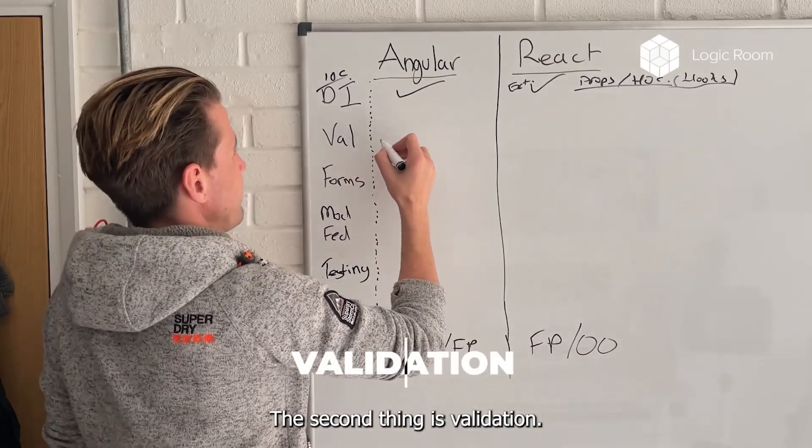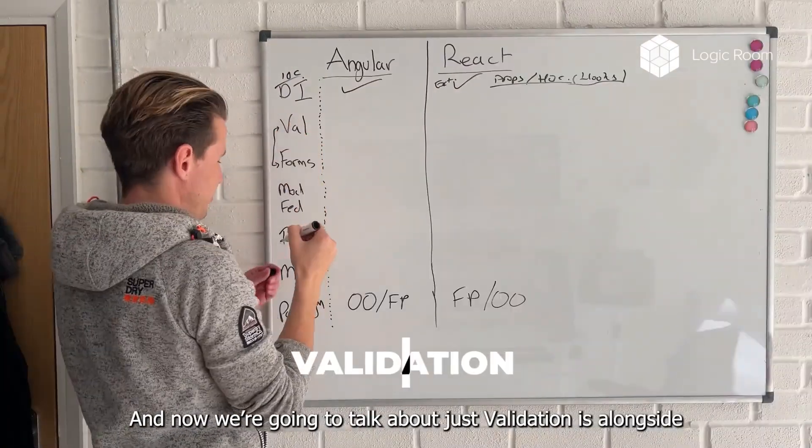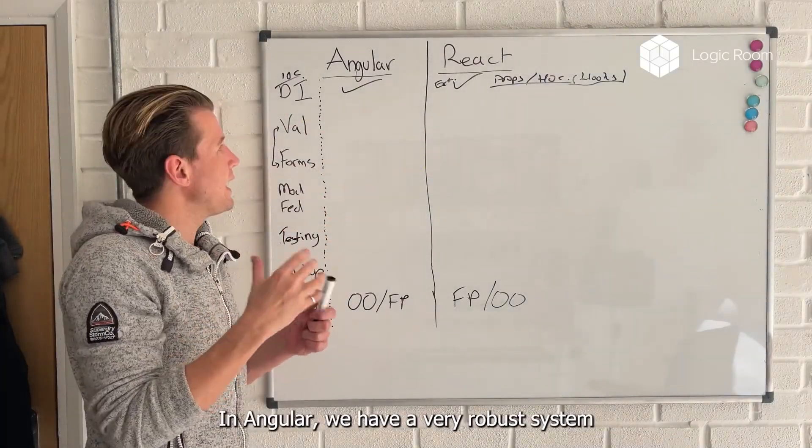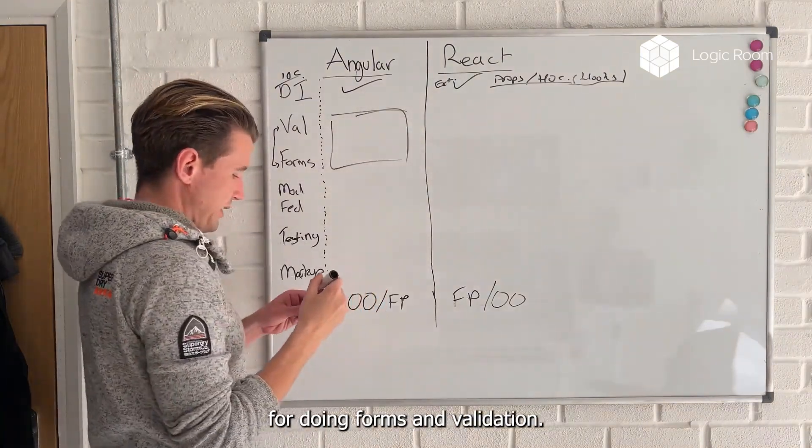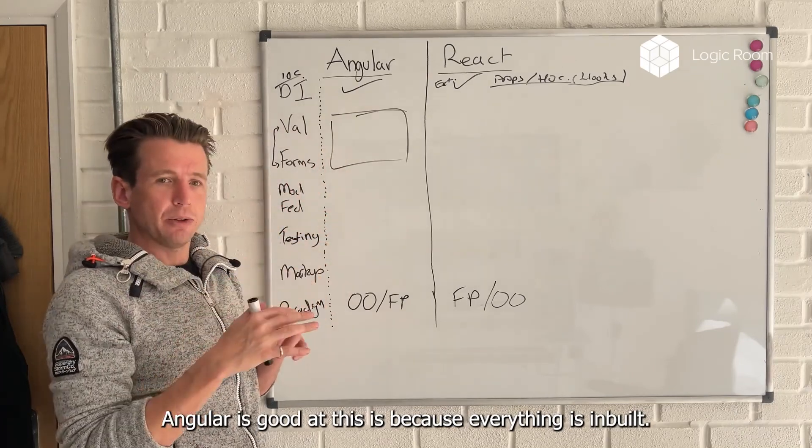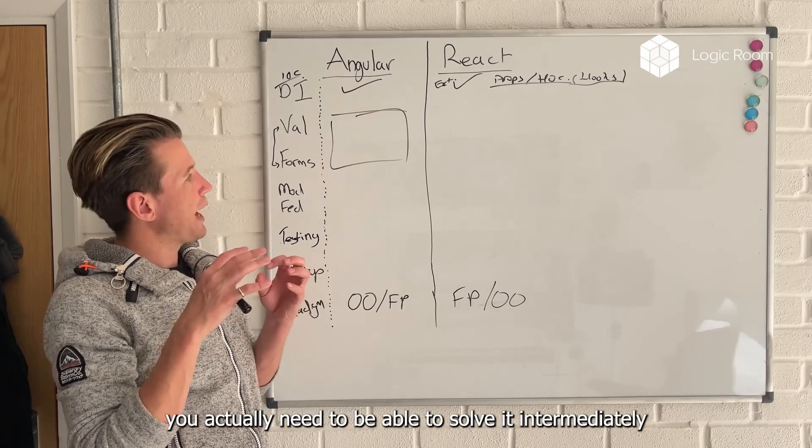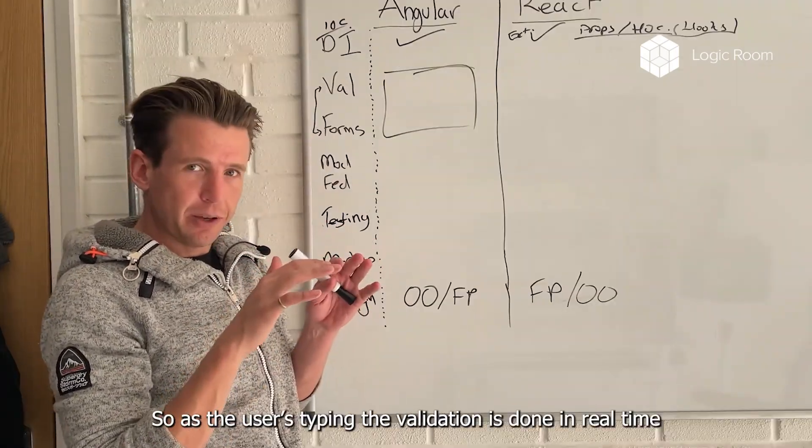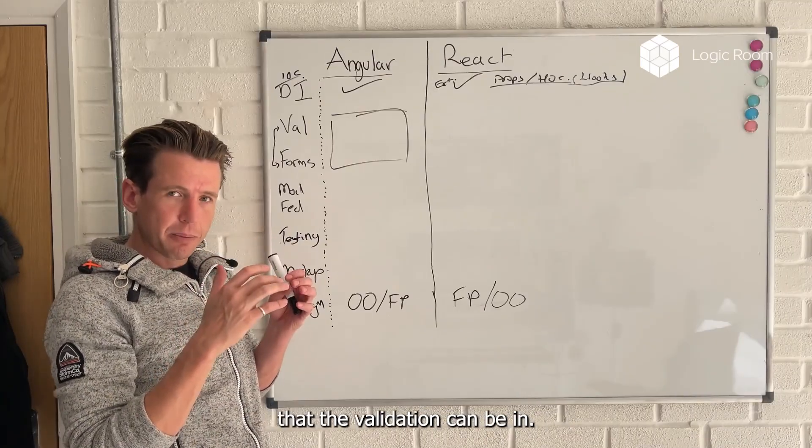The second thing is validation. And we're going to talk about validation alongside its sister forms, because both of them are quite tightly coupled. In Angular, we have a very robust system for doing forms and validation. The reason that Angular is good at this is because everything is inbuilt. And when you have forms and validation built into UI framework, you actually need to be able to intermediately store states. So as the user's typing, the validation is done in real time.